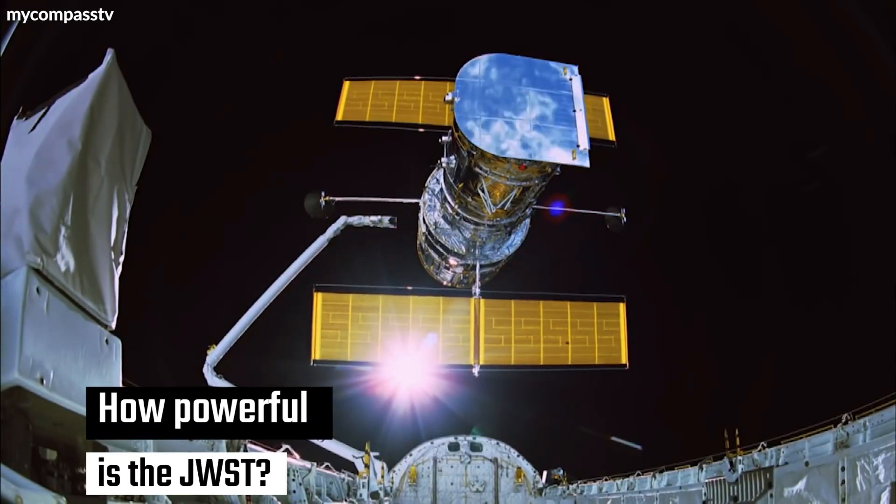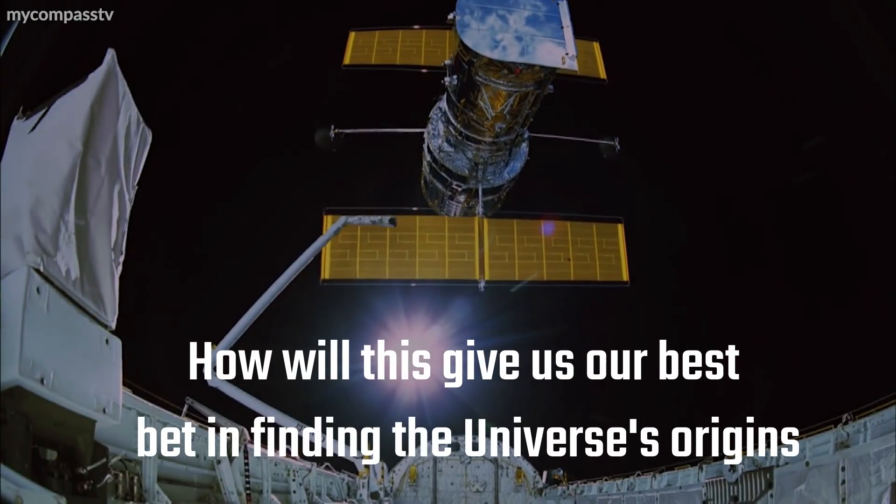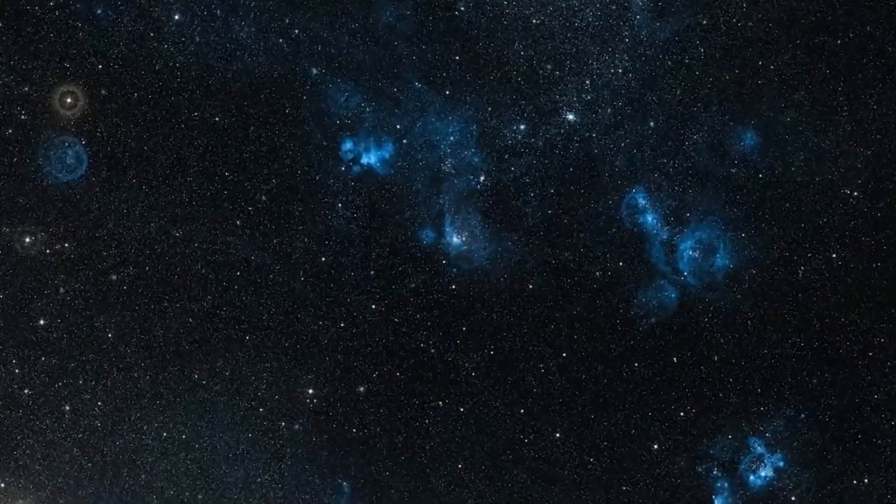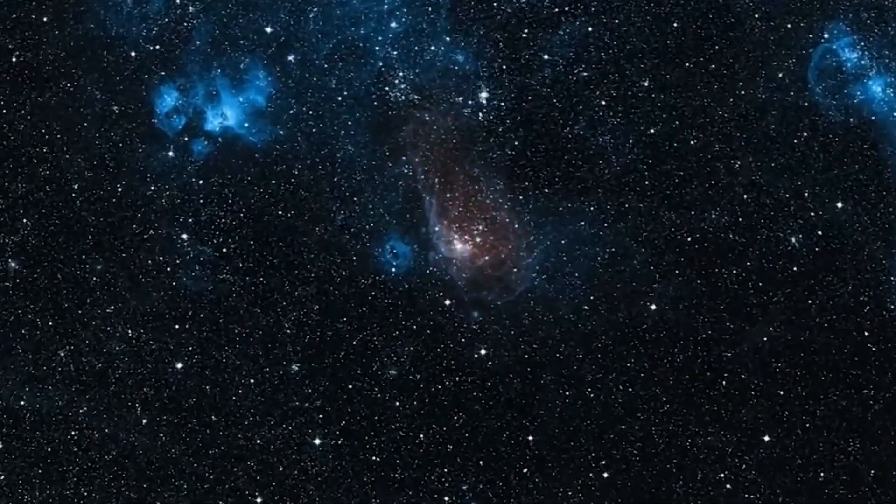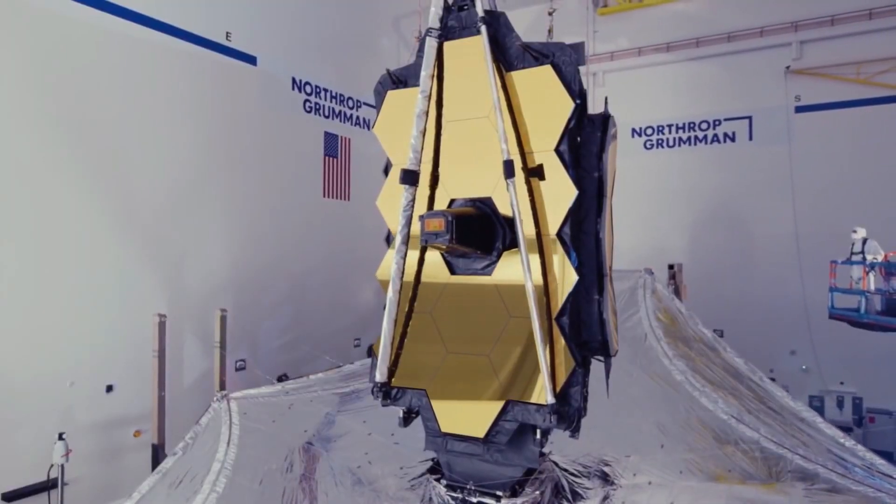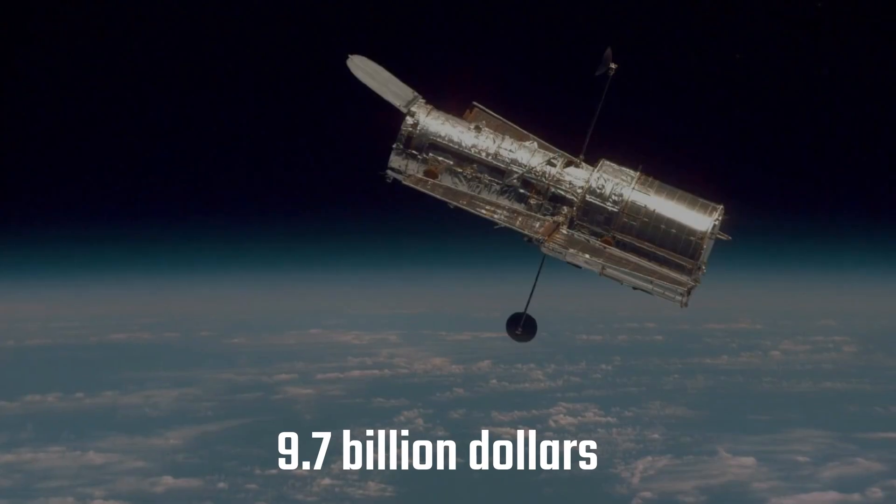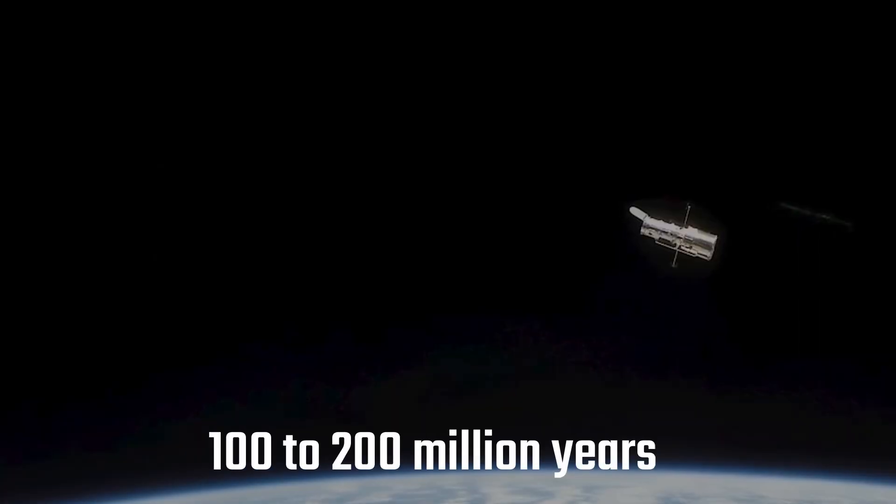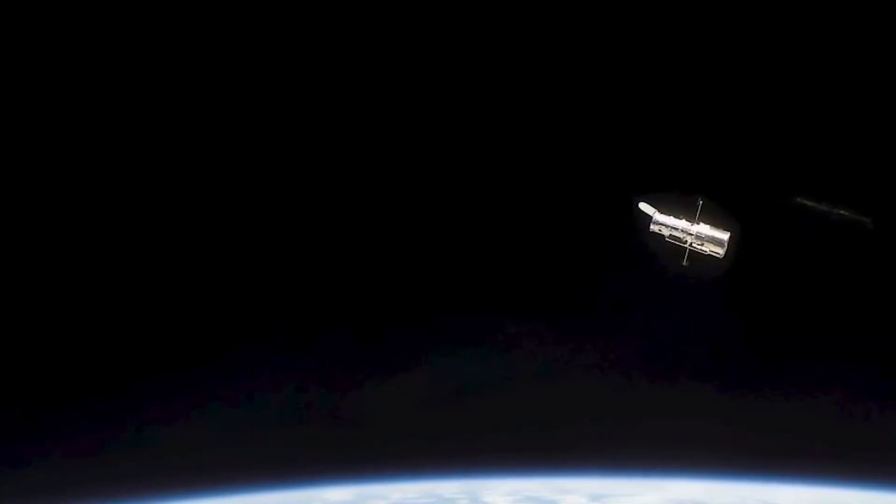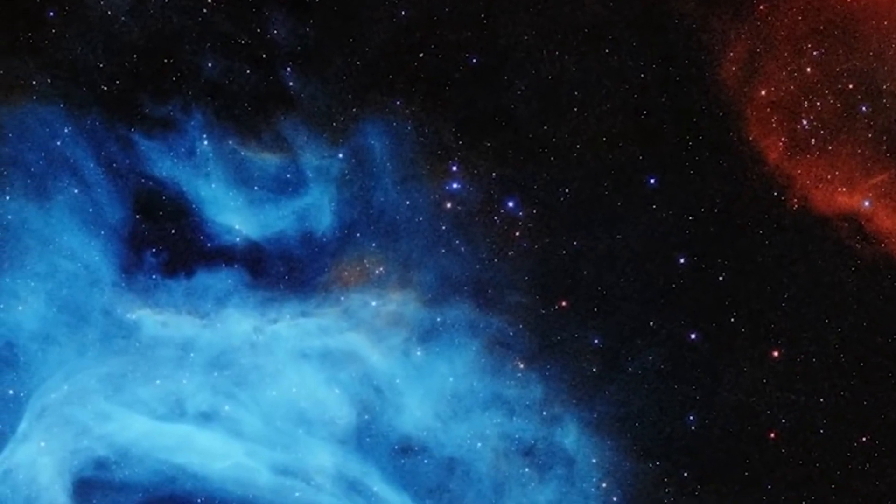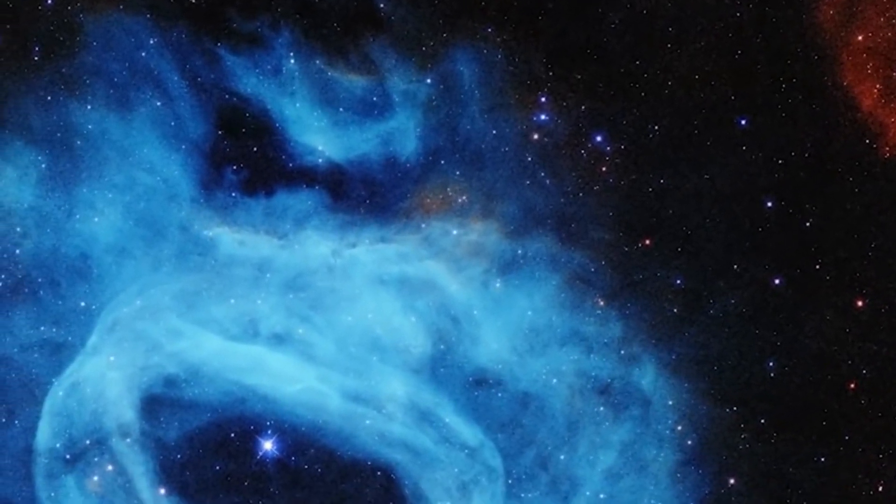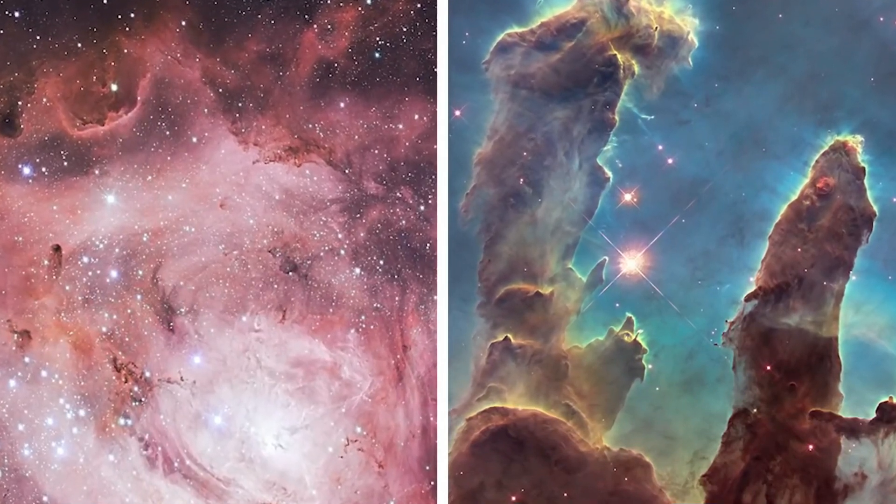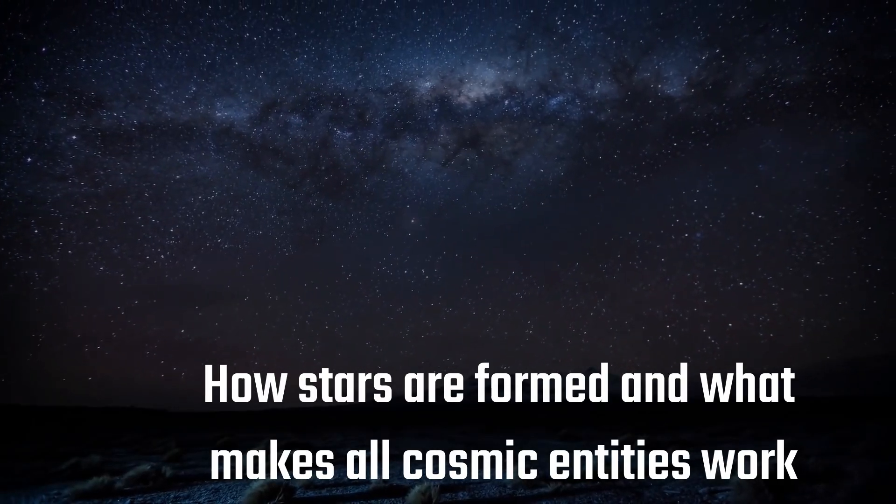So how powerful is the JWST? How will this give us our best bet in finding the universe's origins? NASA has put a humongous amount of time and money into this project. After nearly 20 years of hard work and $9.7 billion, the telescope is finally in space. It can look back 100 to 200 million years back in time. This will help us find the origins of the universe and the first moments of the Big Bang, and more information about how stars are formed and what makes all cosmic entities work.